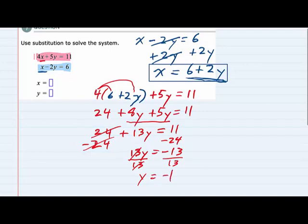So at this point, we have half of the solution. We have the y value, negative 1. And to find the x value, we can go back to this equation that we had earlier, where we had solved for x.